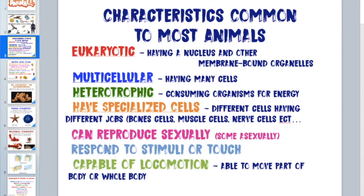Sponges look like plants and seem to just sit there, but they have little flagella inside their body that bring a current of water and food in. When sponges are larvae, they are free-swimming, and then they plant themselves into the ground and develop and grow from that point.